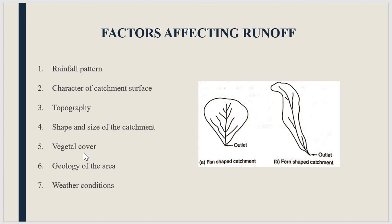The next factor is vegetal cover. If the area is protected with more vegetation, the rainwater which falls on the ground will not experience much evaporation loss, because the sun's rays cannot reach directly to the ground surface. But if the area is very plain with no vegetal cover, the evaporation loss may be very high and runoff will be less.